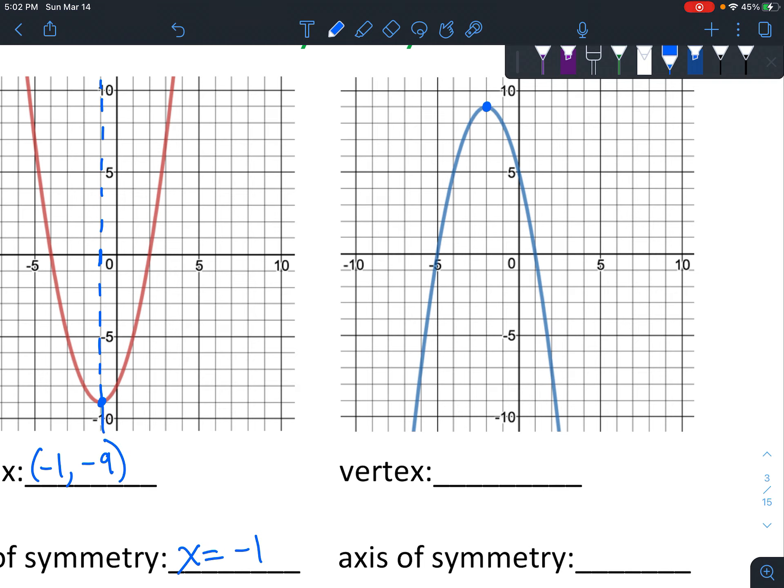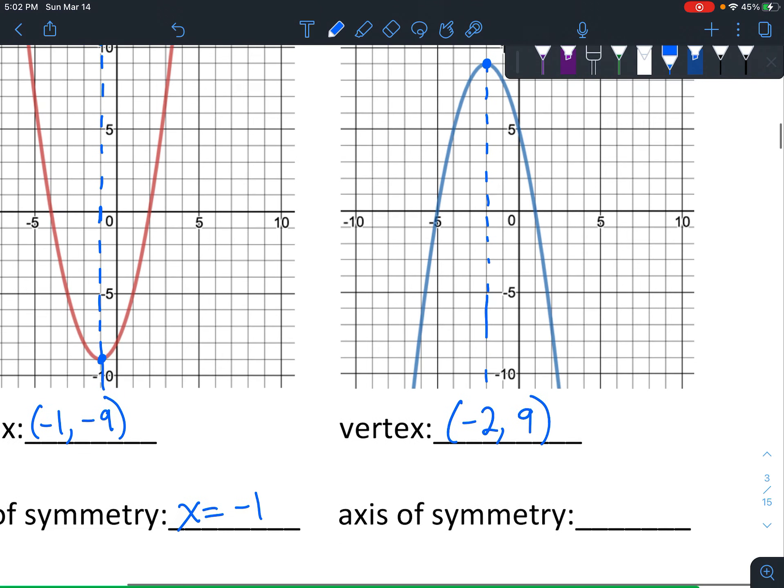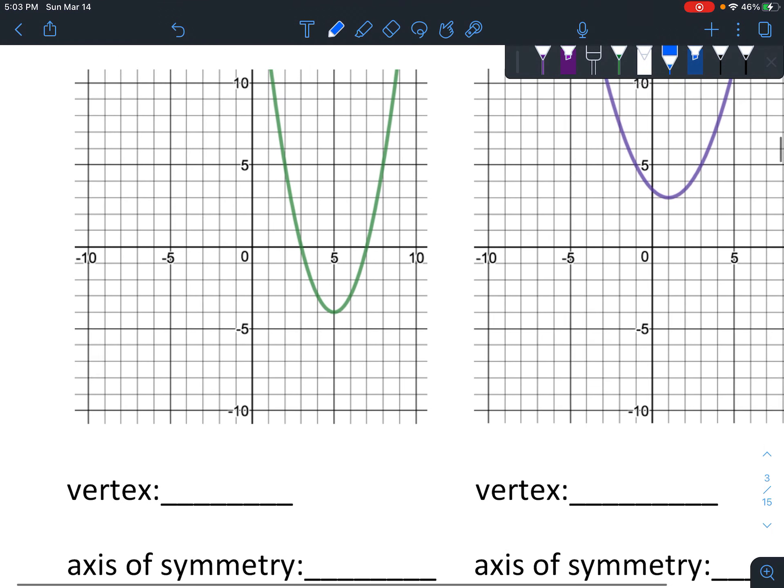Okay, so vertex is: find that point at the very top or the very bottom, and then draw your quick little dotted line. And notice that we go two to the left and then up nine. So two to the left is negative two, up nine is positive nine. The axis of symmetry is always right there, the same x value as the vertex.